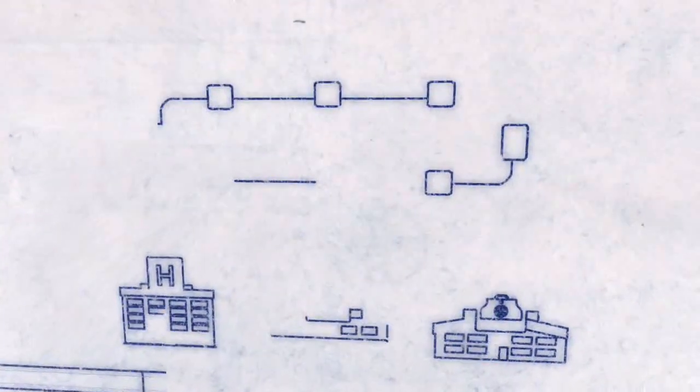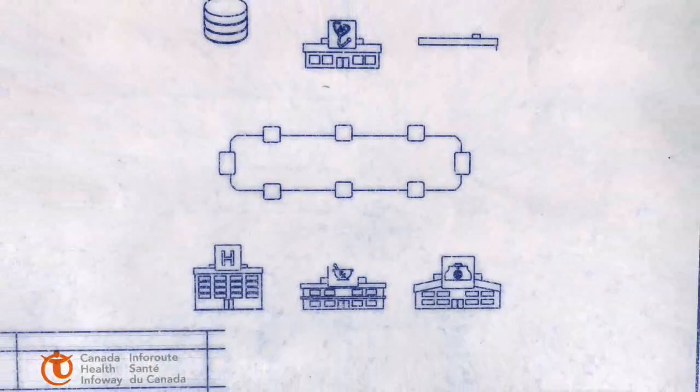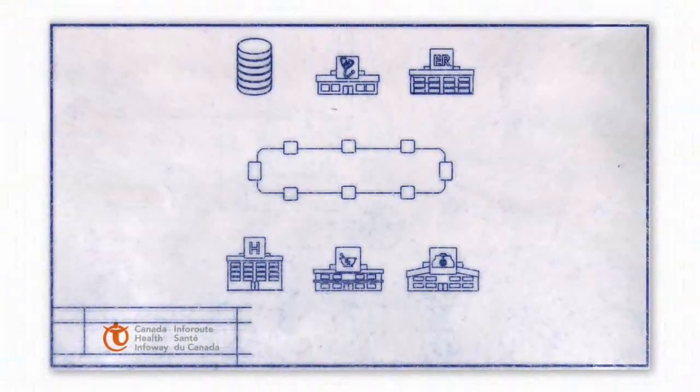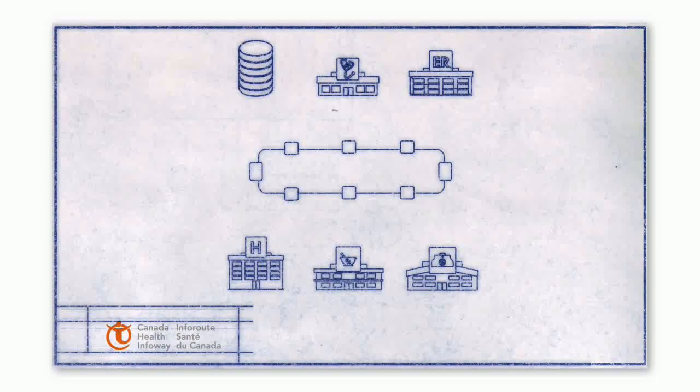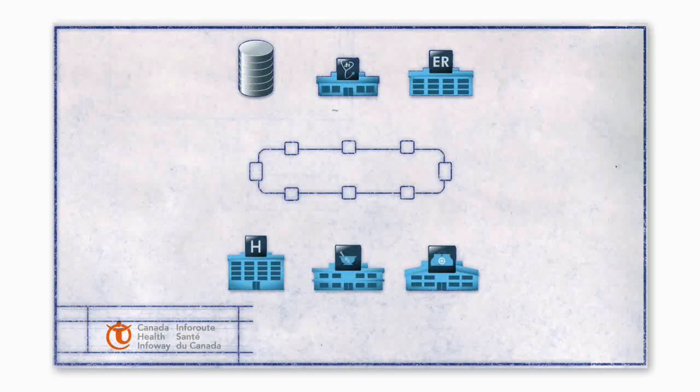The blueprint calls for three fundamental components that all need to be in place to have a fully functioning electronic health record network. The three components are storage, point-of-care systems, and connection.